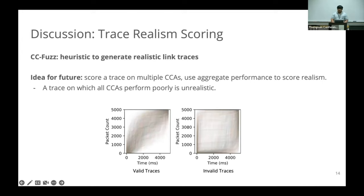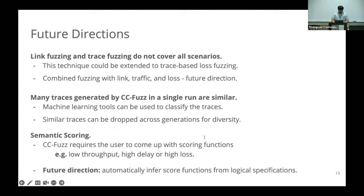For future ideas: right now we use a heuristic to generate realistic traces, but we plan to generate completely random traces with no realism constraints, and run them on a large set of existing CCAs to see if some CCAs perform well. If no CCAs perform well, that trace is not interesting; if at least one or two perform reasonably well, it's interesting. The graphs show interesting versus uninteresting service curves under this method.